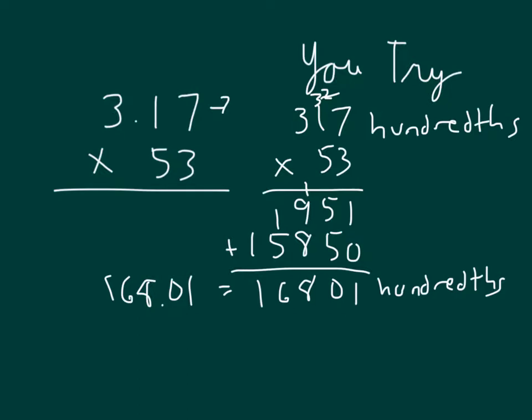Here's our estimate and our estimated product. 3 times 50, which is 150, and that would help me place my decimal point.